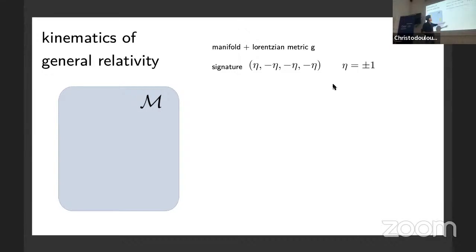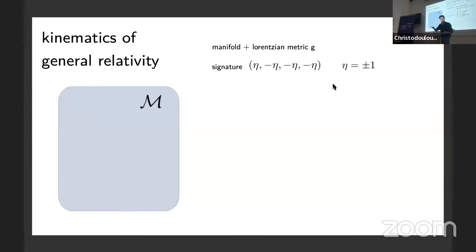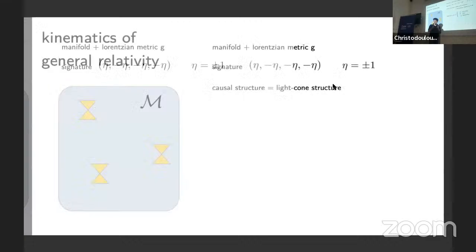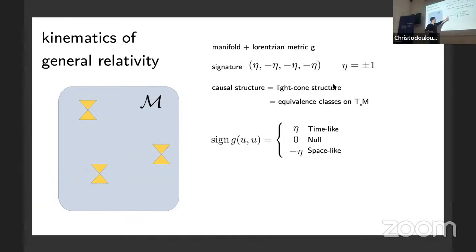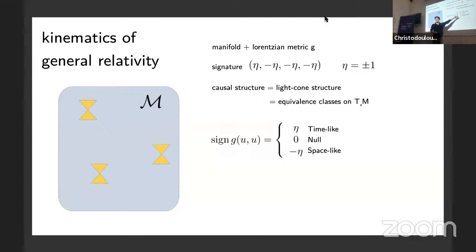What is the causal structure in GR? The causal structure is the light cone structure. At every point on my manifold I can locally grow a light cone. There's a nice way to formulate this more precisely: the causal structure is an equivalence class on my tangent space, distinguishing between time-like, null, and space-like vectors. To know whether a vector is time-like, null, or space-like, I compute the norm with my metric and look at the sign — whether it's eta, minus eta, or zero.